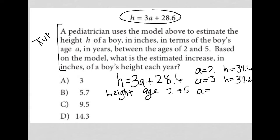And when a is 4, and a is 5, I'll just set that up right now. So when a is 4, I'd get 12 plus 28.6, which gives me a height of 40.6. And at 5, I'd get 15 plus 28.6, which would give me a height of 43.6.